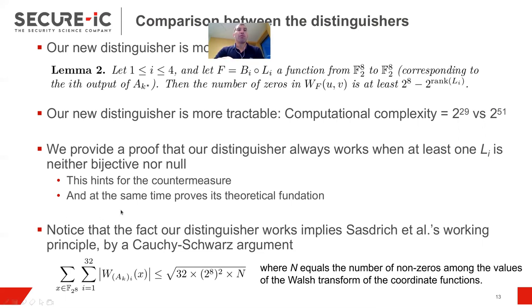And at the same time, it provides a strong theoretical foundation why the countermeasure works. So, you see, at the same time, we prove an existential attack, and at the same time, we reinforce our countermeasure. And just leveraging Cauchy-Schwartz argument, we show that, actually, since our distinguisher is proved to work, it implies that the former one from Sastrich actually also works.